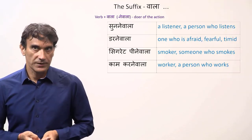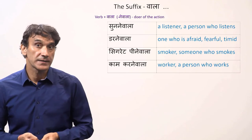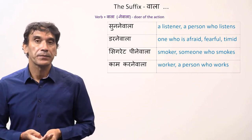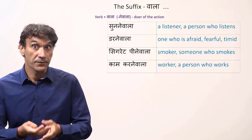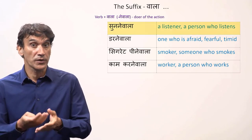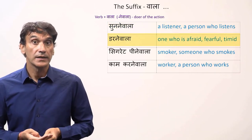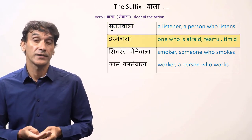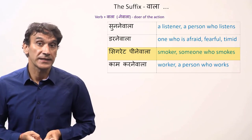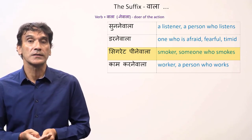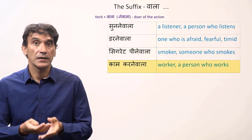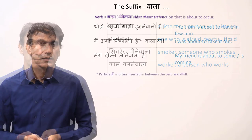Finally, the suffix wala can be used with verbs. The verb takes the infinitive in oblique form, meaning with the ending 'ne,' and it expresses the doer or performer of the action. Sunne wala — sunna is to listen, so sunne wala is a listener. Darne wala — darna is to be afraid, so darne wala is someone fearful or timid. Cigarette peena wala means a smoker. Kaam karne wala — kaam karna means to work, so kaam karne wala is a worker, a person who works.